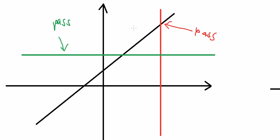Because if you want to determine a one-to-one function, they should pass two conditions: a vertical line test and a horizontal line test. They should have only one intersection each.